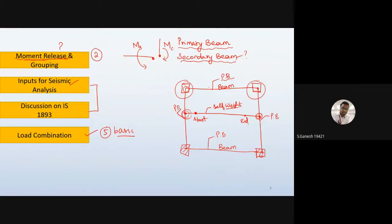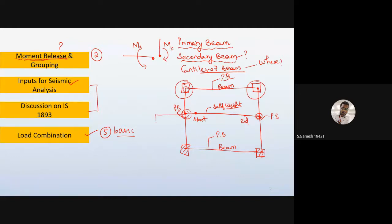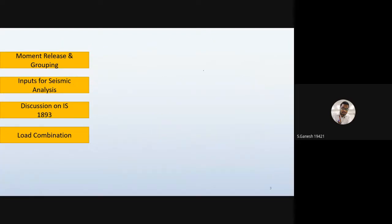Similarly, for a cantilever beam — such as a balcony or corridor projection — the moment release acts at the end portion, not the beginning, because there is a column at the start. The beam projects outward and at the free end there is no column, so overturning moment builds up and there is a risk of failure at that joint.